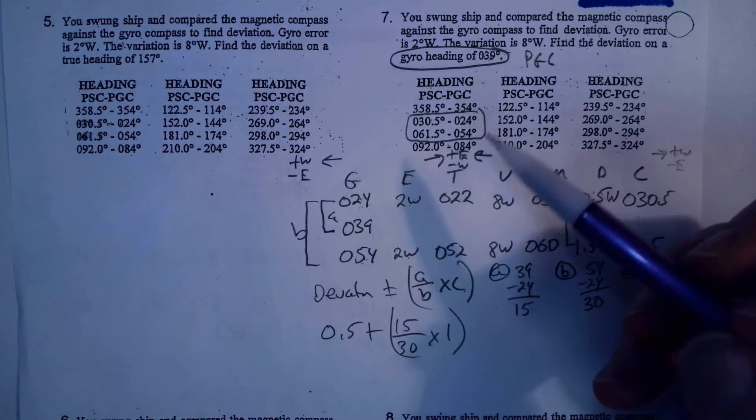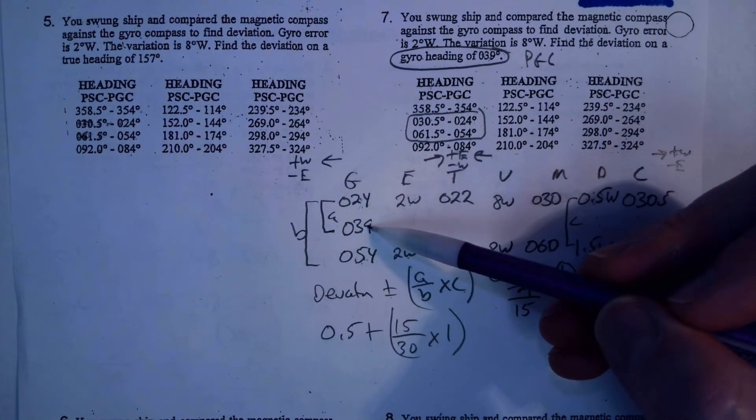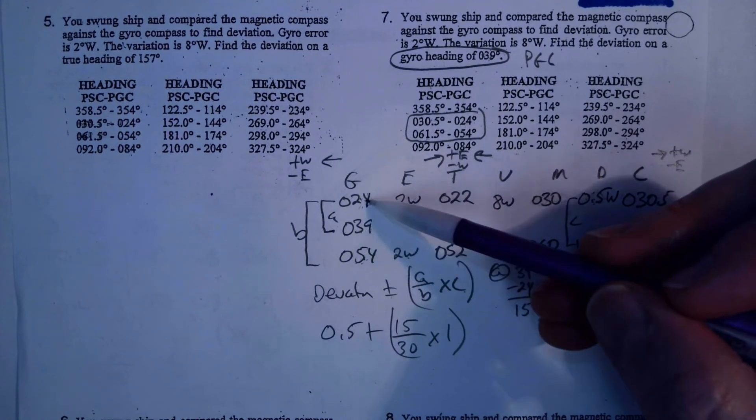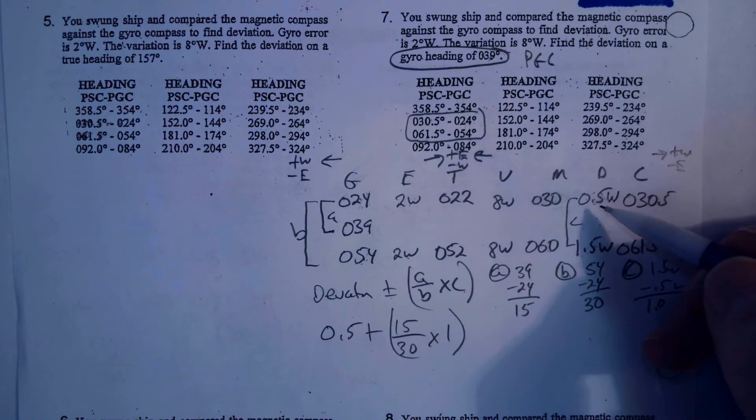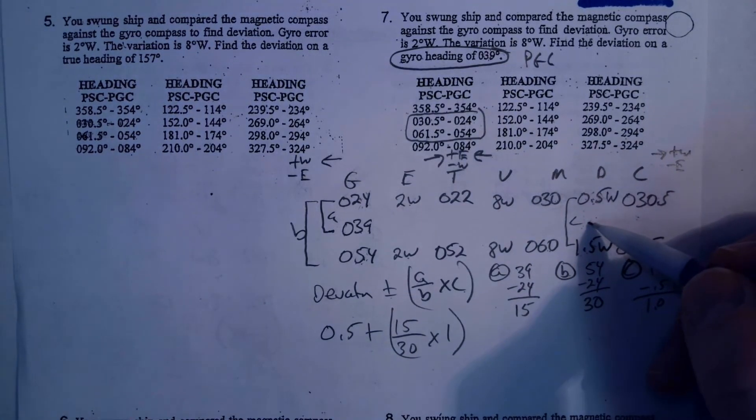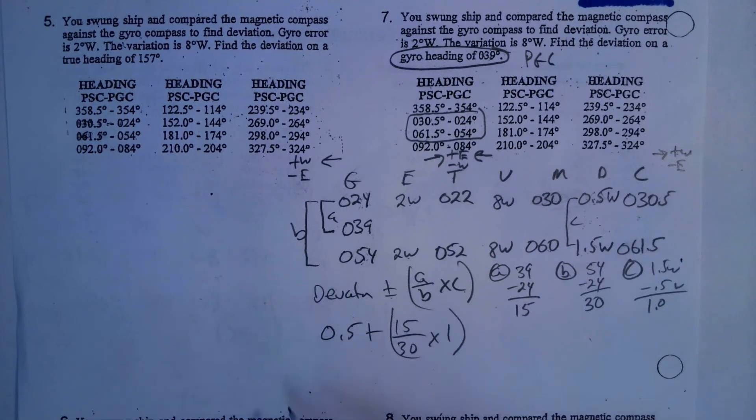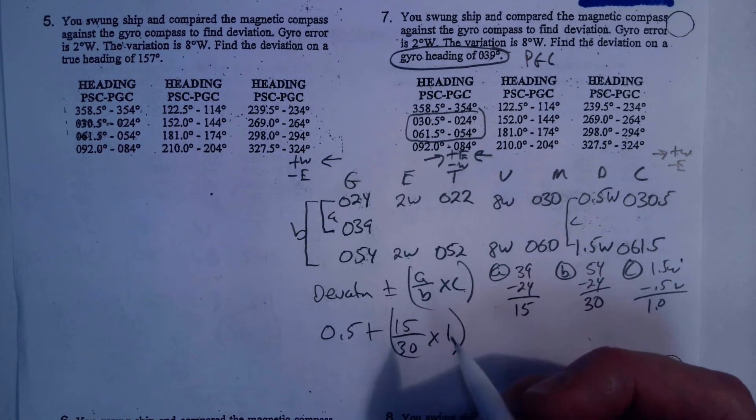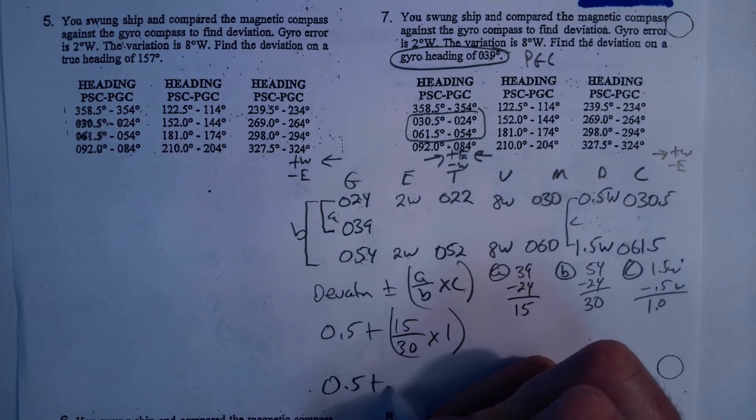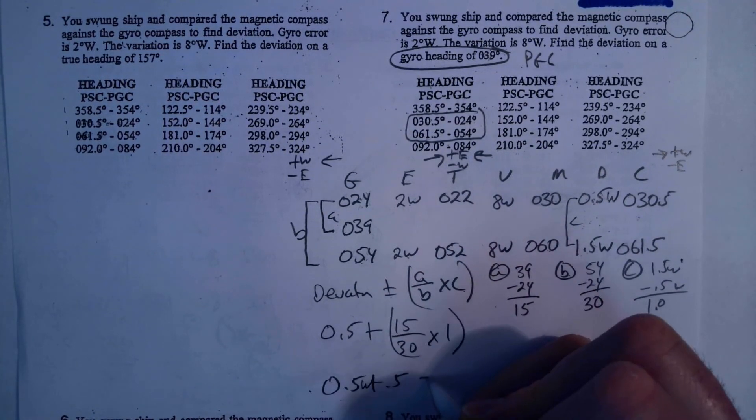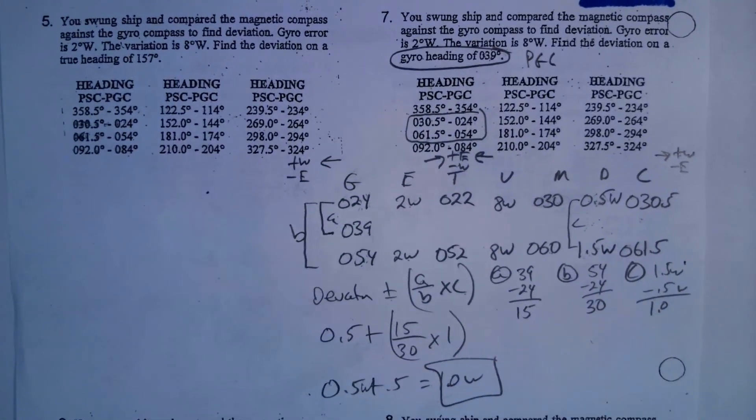Before we even do this math, let's see if we can eyeball this. 24 to 54, the difference between these two is 30, and 24 to 39, that's about 15. So, 39 is halfway between these two. So, I would expect that my deviation is going to be halfway between these two. Well, halfway, the difference between those is 1, so I think it should be 0.5. I think it's going to be 1.0. I'm expecting my deviation to be about 1.0, but I'm going to calculate that based on this. So, 15 divided by 30 is 0.5 times 1 is 0.5. So, I get 0.5 plus 0.5, and that was 0.5 west, means 1.0 west. And that's what we did by eyeball, and that was the answer as well.